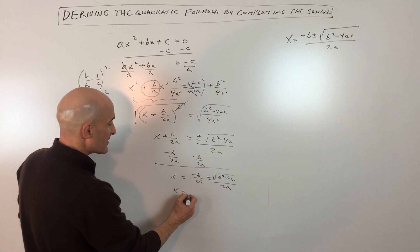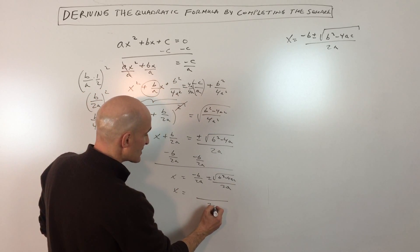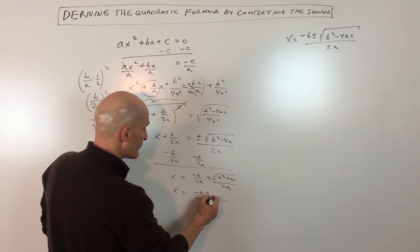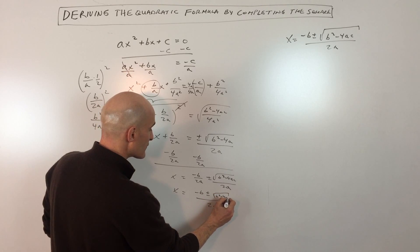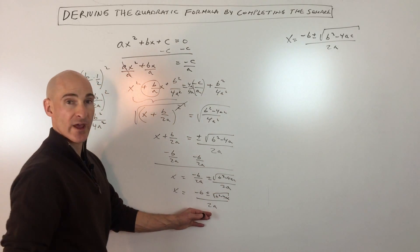And then we can combine these together into one fraction because they have a common denominator, negative b plus or minus the square root of b squared minus 4ac all over 2a.